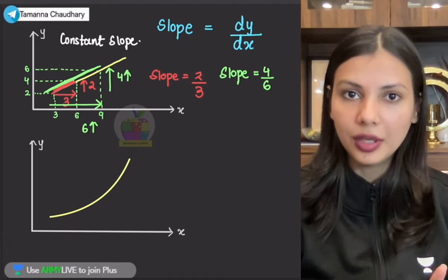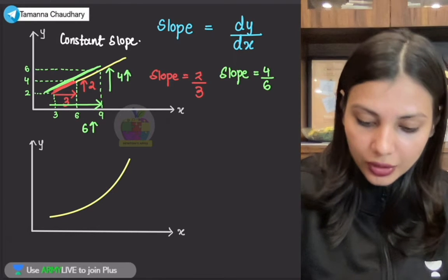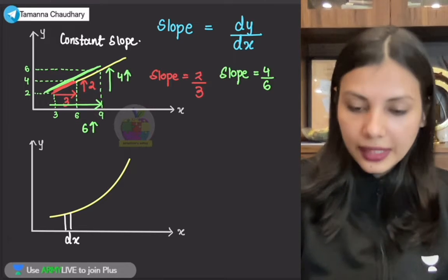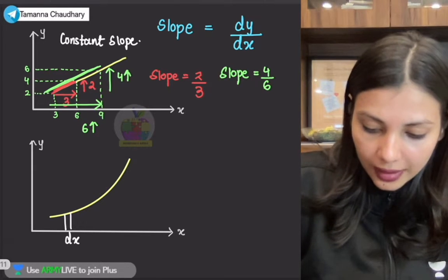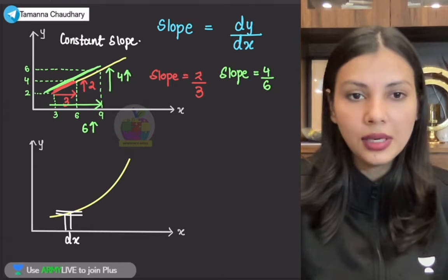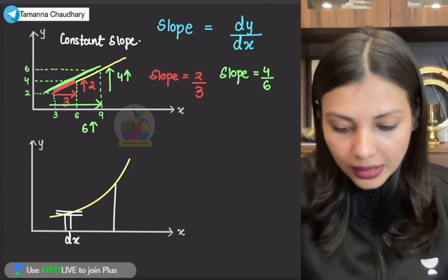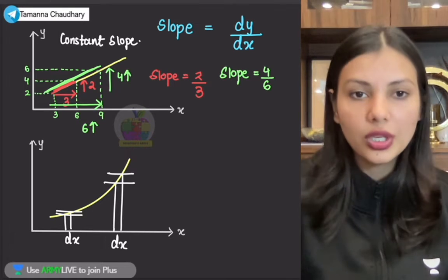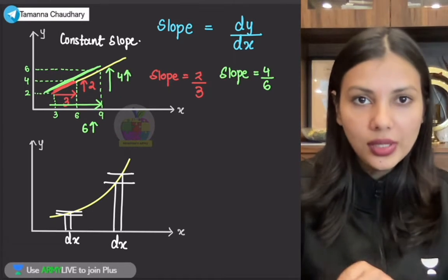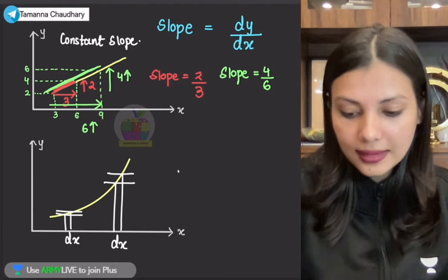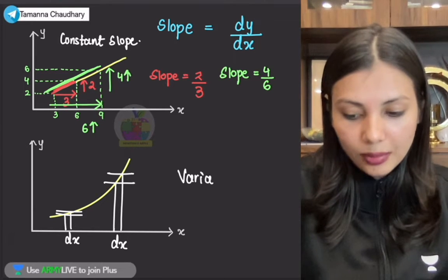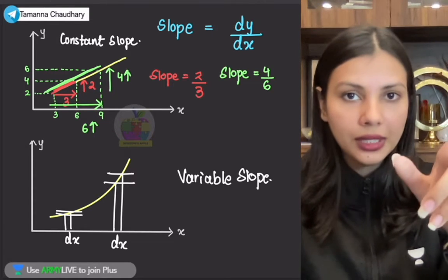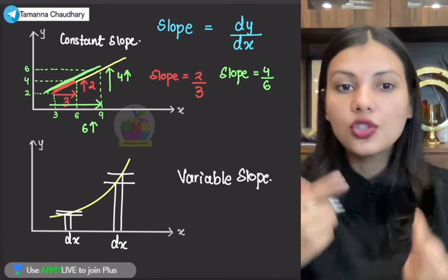Lekin, agar neeche waale graph ki baat karun — neeche waale graph mein, agar main itna sa chota sa change leke aun DX mein, to yahaan par mujhe jo dy mein change mil raha hai, woh itna chhota sa mil raha hai. Lekin agar yahi change in DX mein baad mein leke aati hun, to abki baar mujhe jo change milta hai woh alag milta hai. So as you all can see, this is an example of variable slope — the dependence of Y quantity on X quantity is changing.